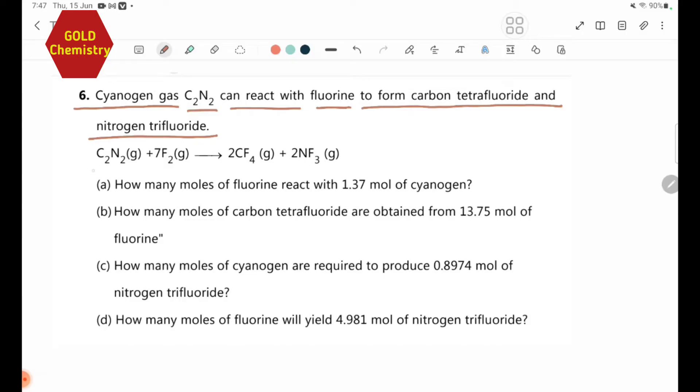The equation is C2N2(g) + 7F2(g) → 2CF4(g) + 2NF3(g). Cyanogen gas can react with fluorine to form carbon tetrafluoride and nitrogen trifluoride.